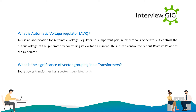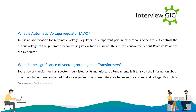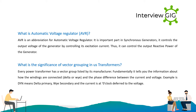What is the significance of vector grouping in power transformers? Every power transformer has a vector group listed by its manufacturer. It tells you the information about how the windings are connected (delta or Y) and the phase difference between the current and voltage. For example, DYN means delta primary, Y secondary, and the current is at zero clock position deferred to the voltage.